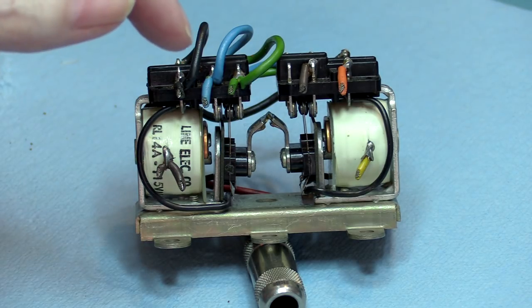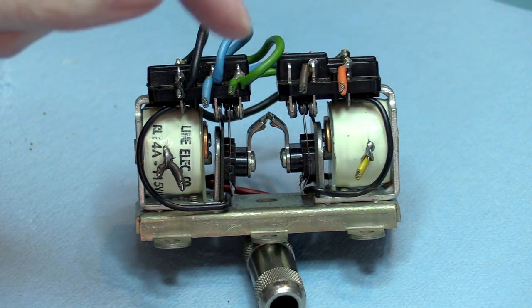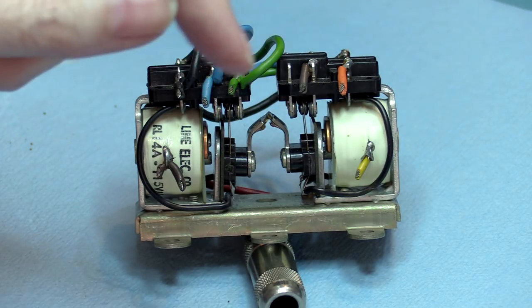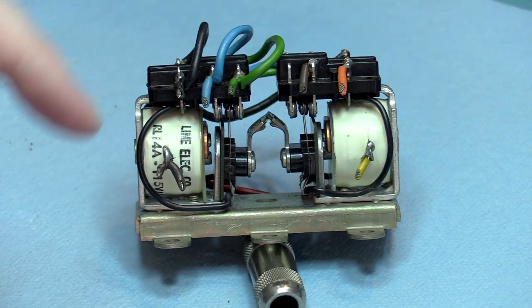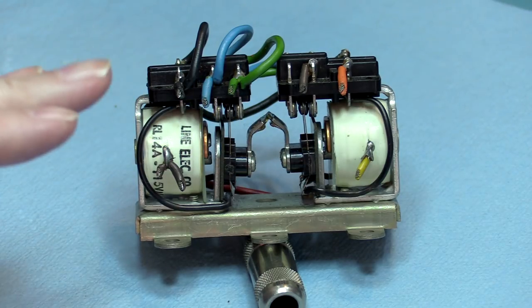And by breaking that circuit one way or the other between the two different sets of contacts between the two different relays, you flip and flop. But that's not how this works.